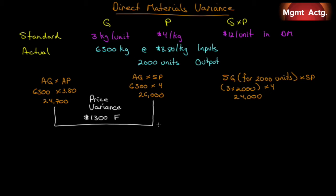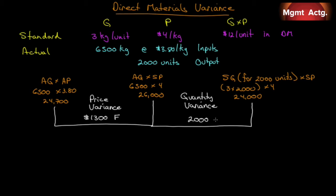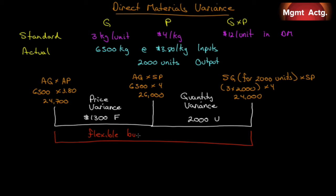To produce 2,000 units based on standard quantity and standard price, it should have cost us $24,000. So our quantity variance — comparing the middle column to the right — $26,000 minus $24,000 is positive $2,000, so it's unfavorable. We have a total flexible budget variance: $24,700 minus $24,000 is $700 positive, so we have a total budget variance of $700 unfavorable.